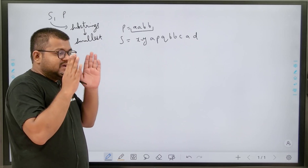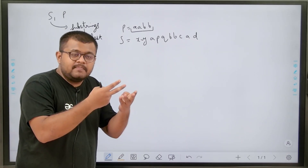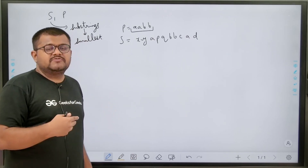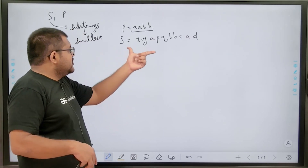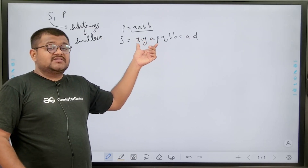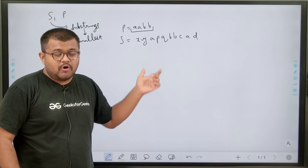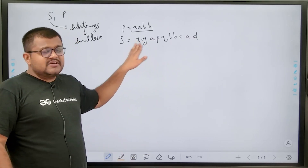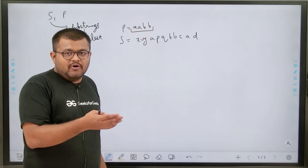Basically, a substring in S should contain all the characters in P. There can be other extra characters in the substring we are considering, and the length of such a substring should be the smallest. Out of all such substrings, we need to find the smallest length substring. Also, the order of characters does not matter — the characters of P can be present in any order in the substring of S.